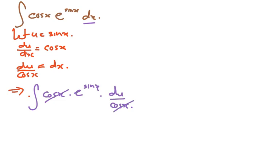Since it's the same, what's left is e to the power of sine x. Now I've made u as sine x, so substituting this: e to the power of u. This is in terms of du. When I cancel cos x with cos x, what's left is just du.